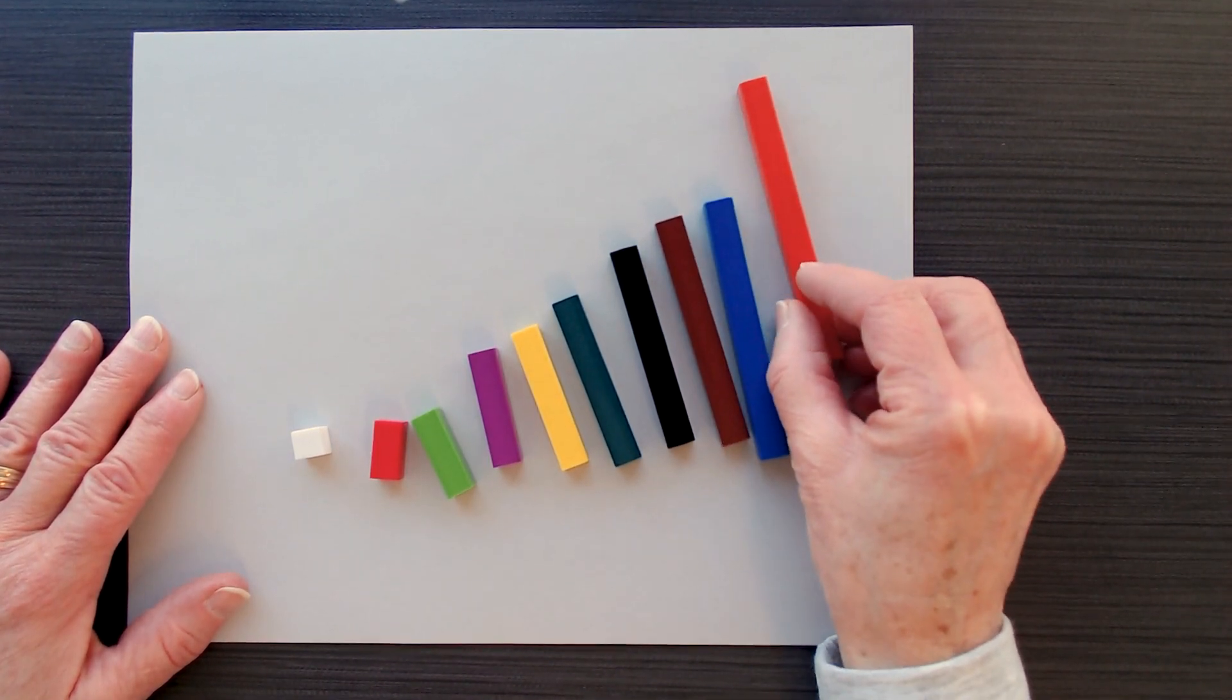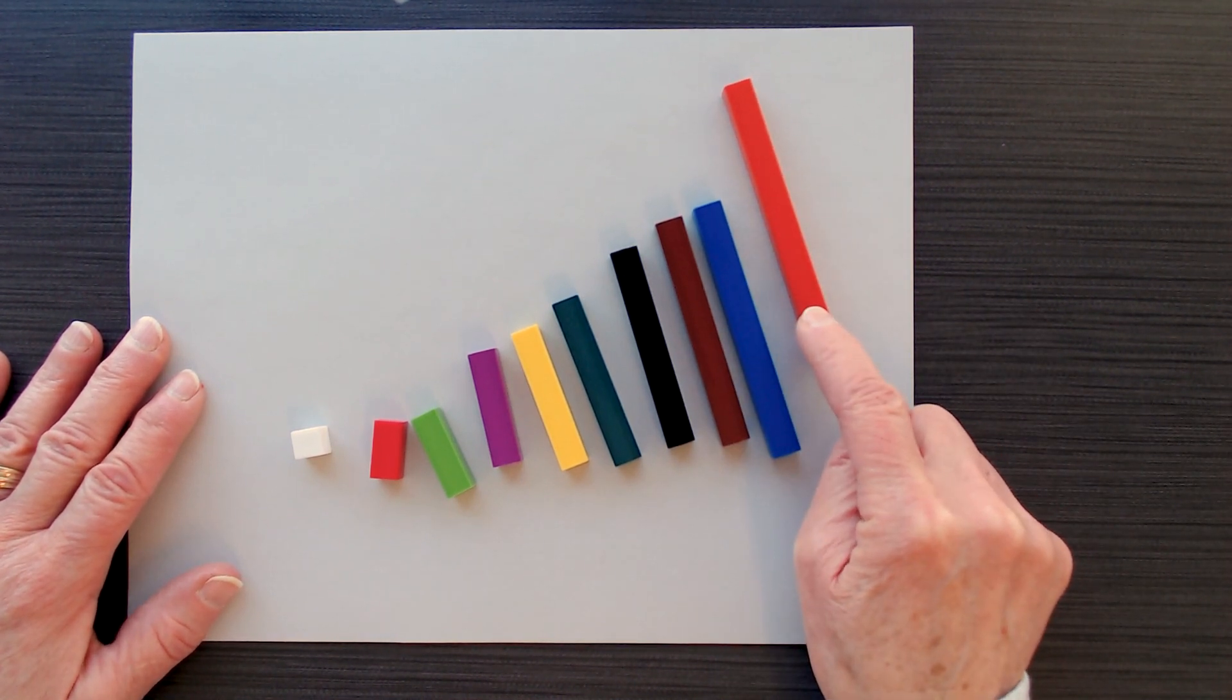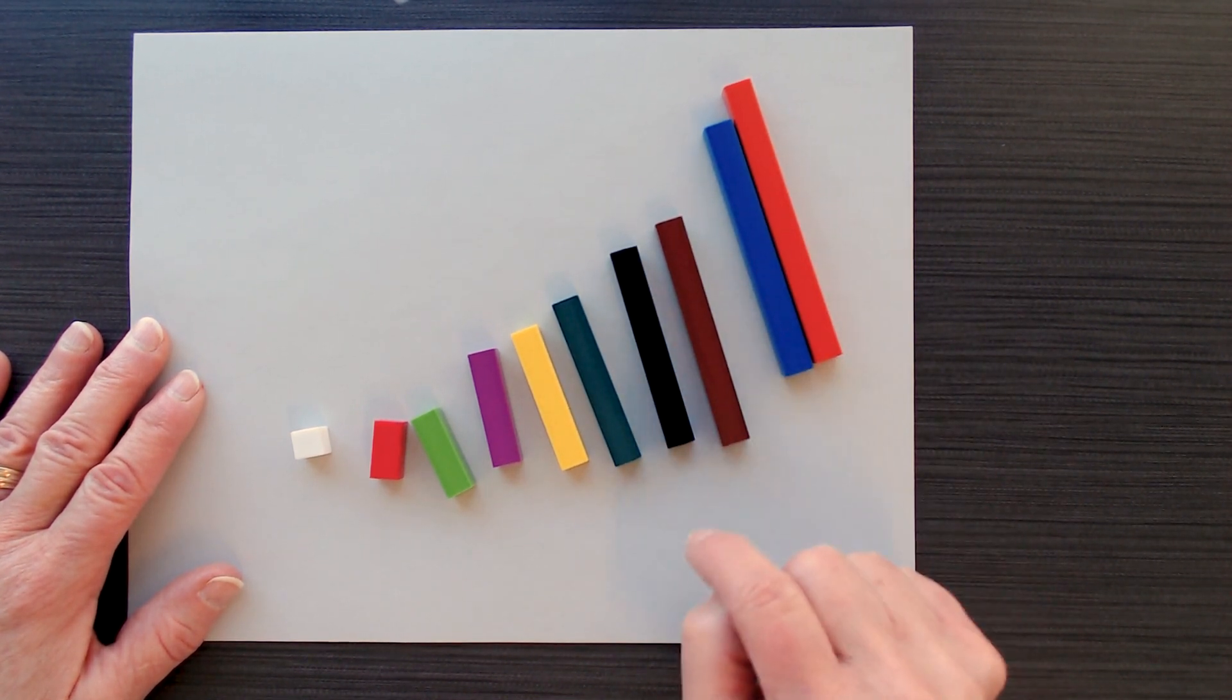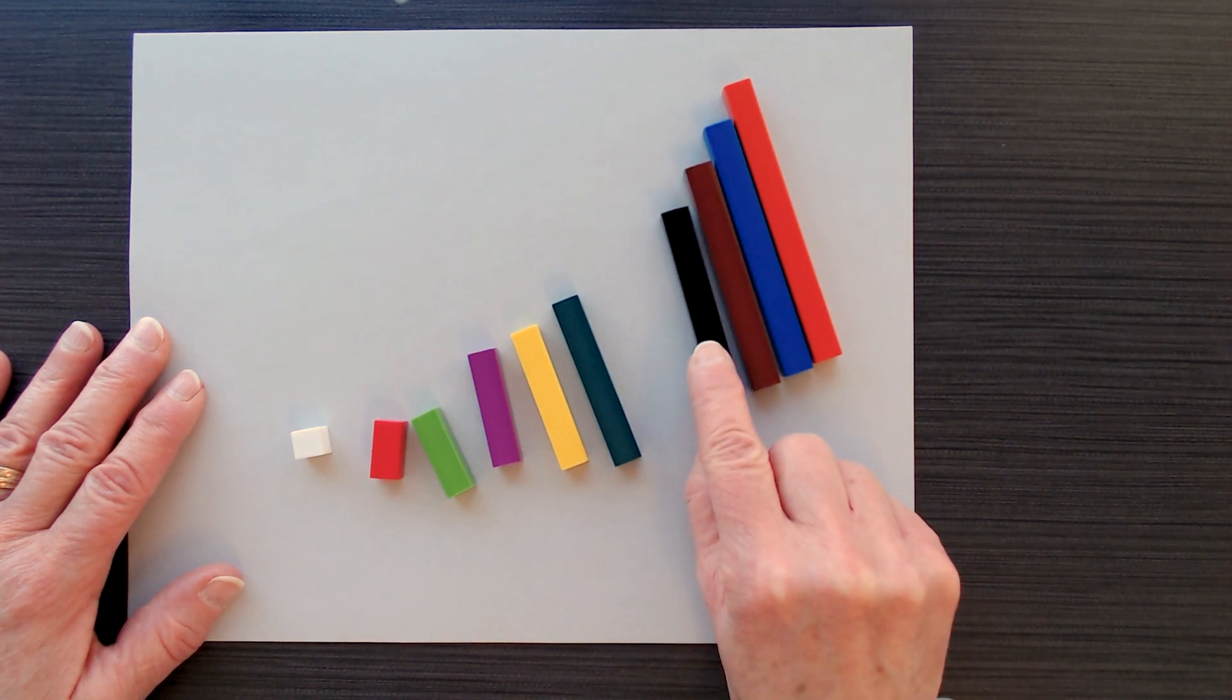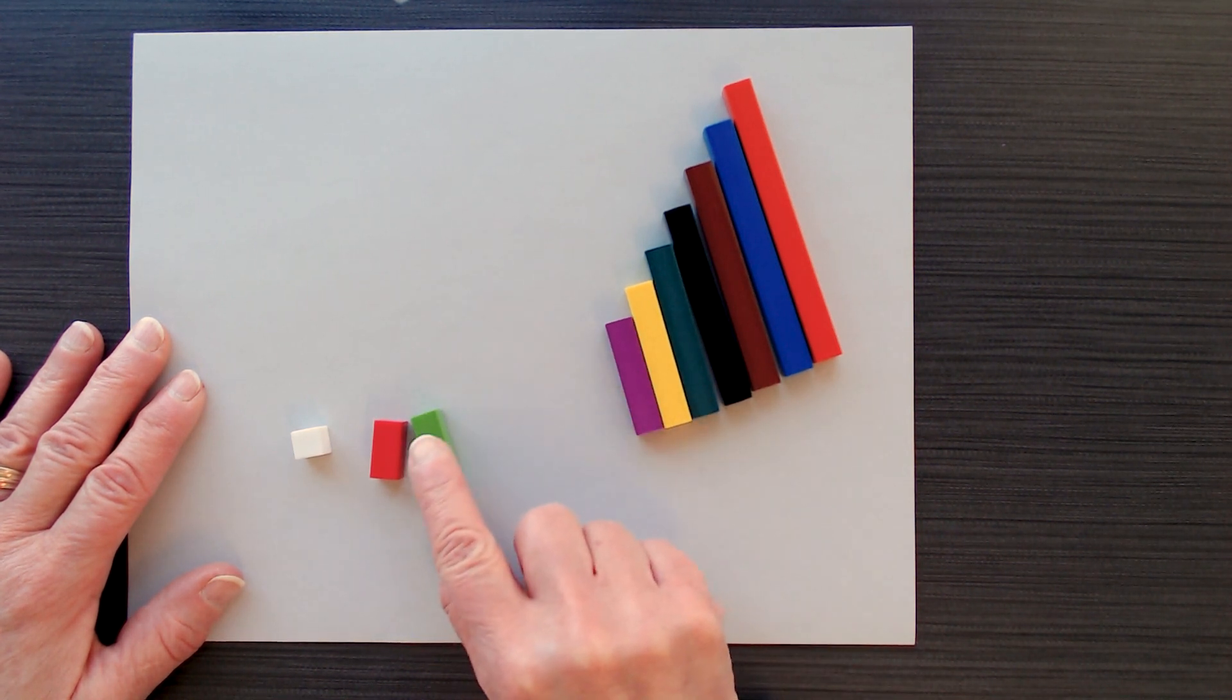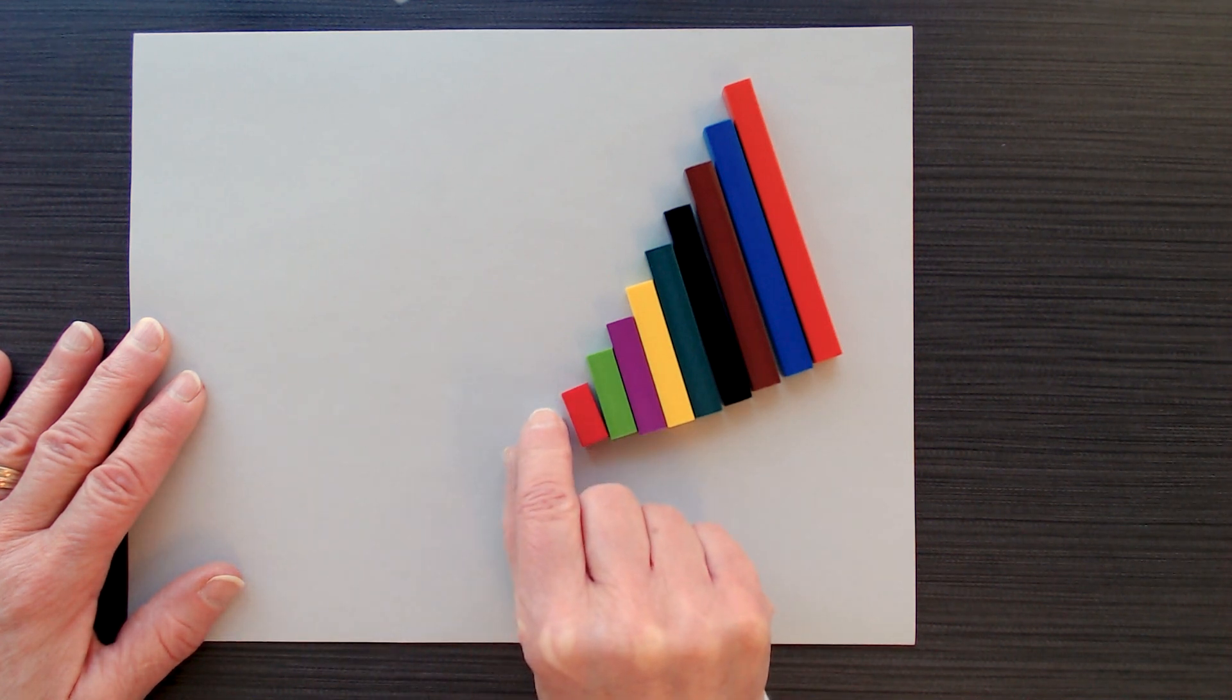In this case, this orange rod, I'm going to assign a value of 1. So that would mean that this blue one would be 9 tenths, 8 tenths, 7 tenths, 6 tenths, 5 tenths, 4 tenths, 3 tenths, 2 tenths, and 1 tenth.